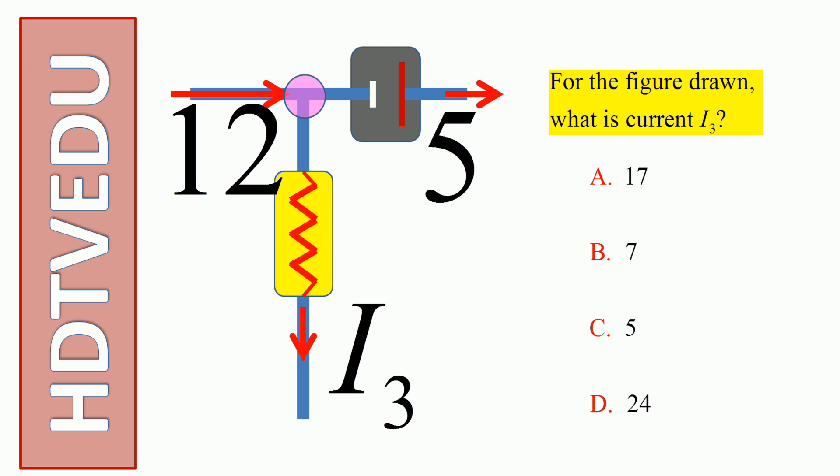is leaving, I₃ is leaving. So the question is what is I₃? Current entering the point should be equal to current leaving the point: 5 plus I₃. So subtract 5 from both sides and what do we get? I₃ is...